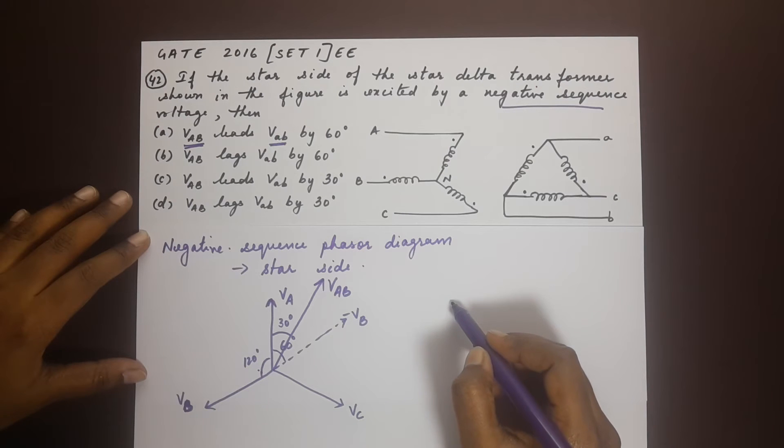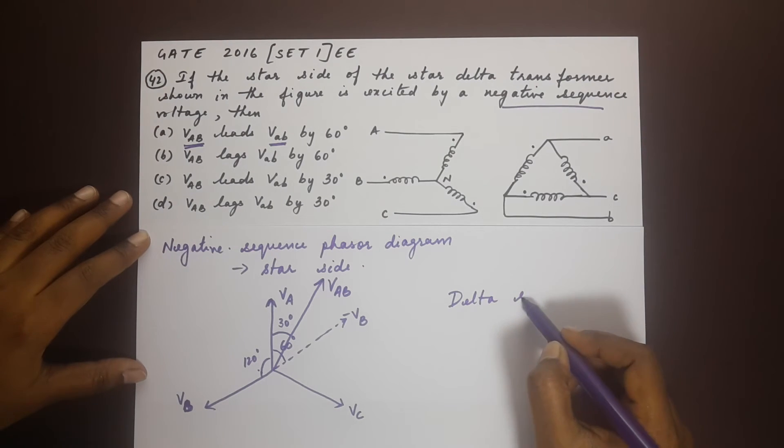Now let's see what the phasor would be for the secondary side, the delta side. For the delta side we have VA here and this is our phase.